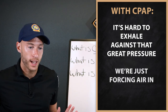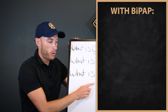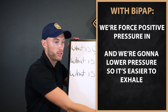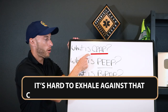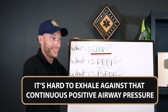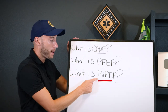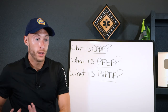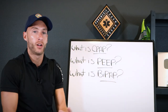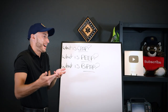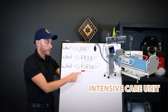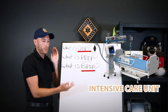With CPAP, we're just continuously forcing air in. With BiPAP — bi-level — we're going to force that positive pressure in, and then we lower the pressure so it's easier to exhale. Push in, lower it, let them exhale, bring it up, bring it down. The only con of CPAP is it can be hard to exhale against the continuous positive airway pressure. That's why in a hospital — ICU, medical floor, or ER — patients are often on BiPAP versus CPAP because it's more comfortable.